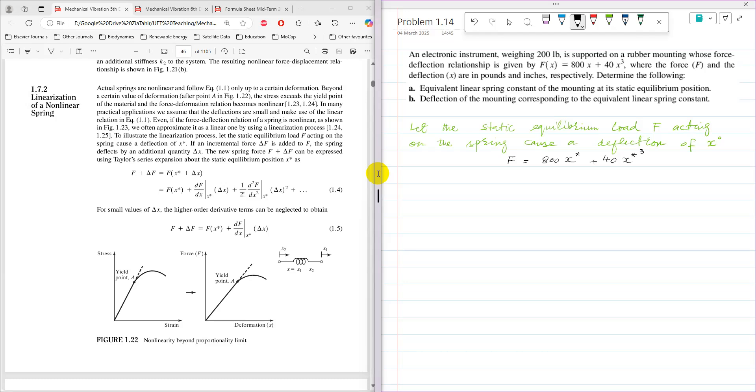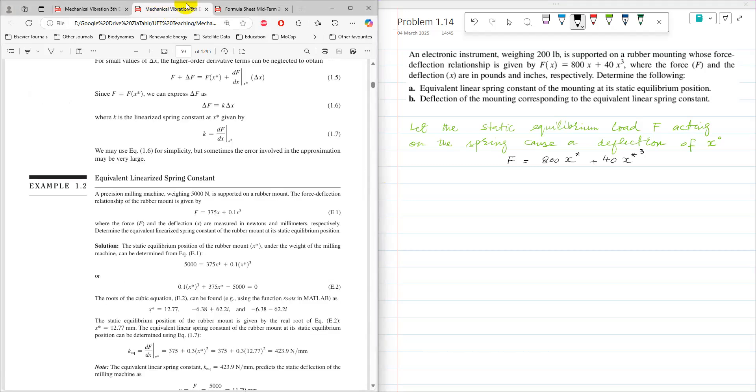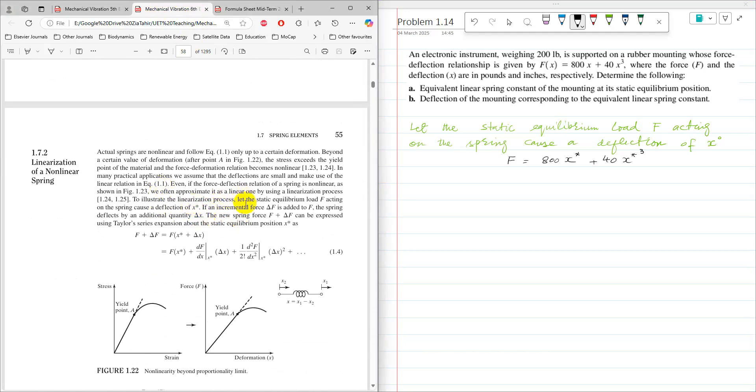We are resuming from the book what it says: the static equilibrium load f acting on the spring causes a deflection of x*. So it is f = 800x* + 40x*³ and this f is basically equal to the weight which is attached which is 200 pounds.